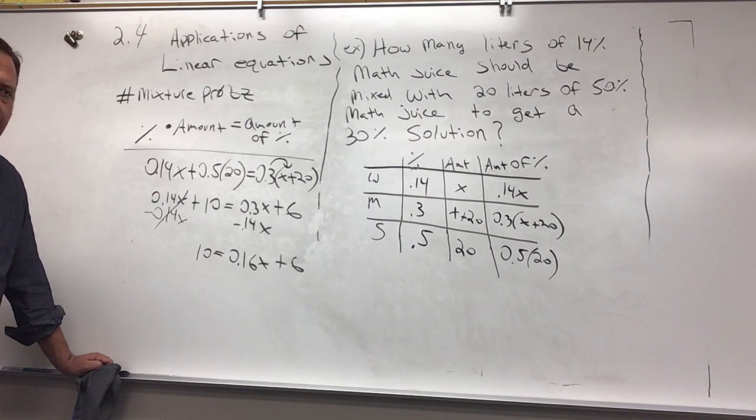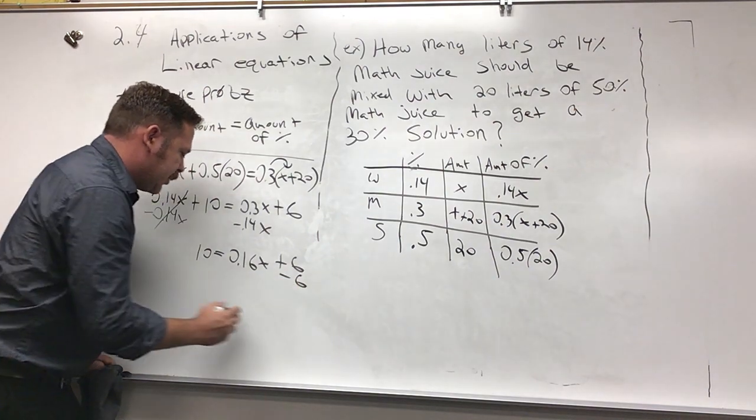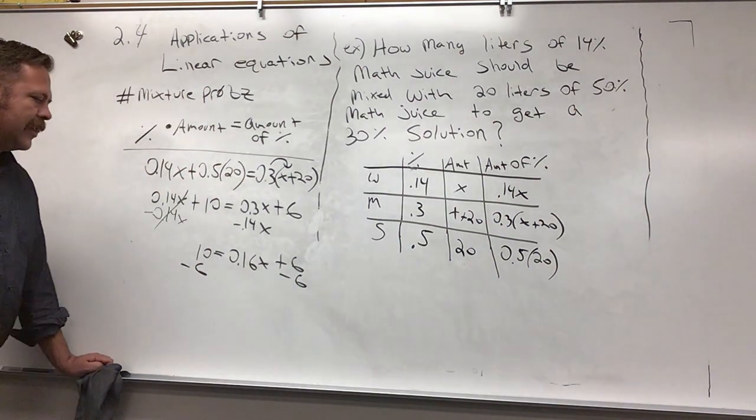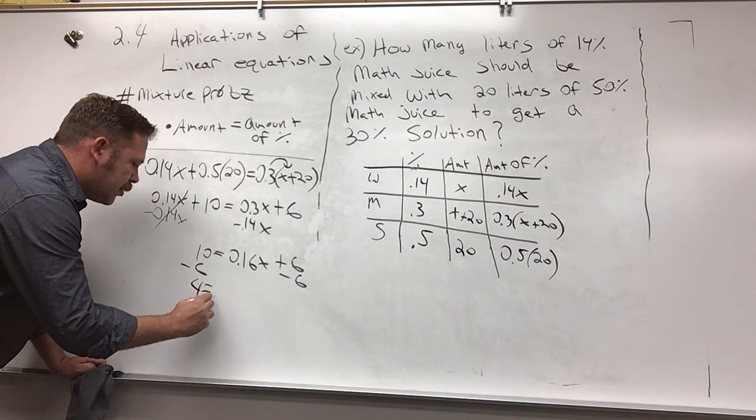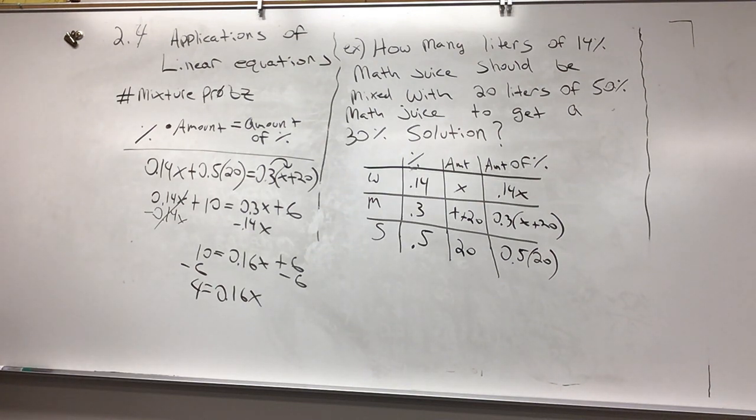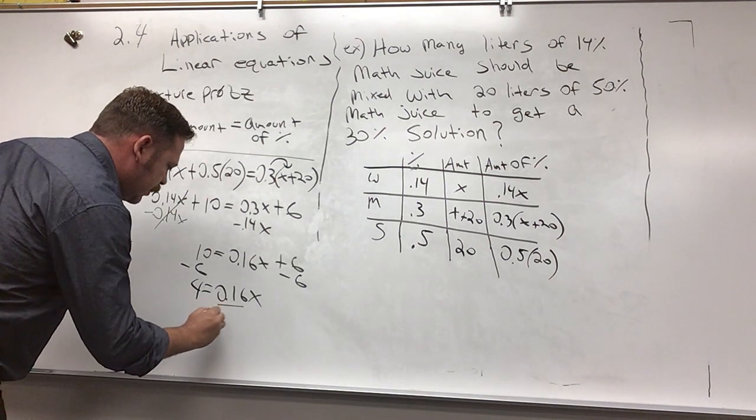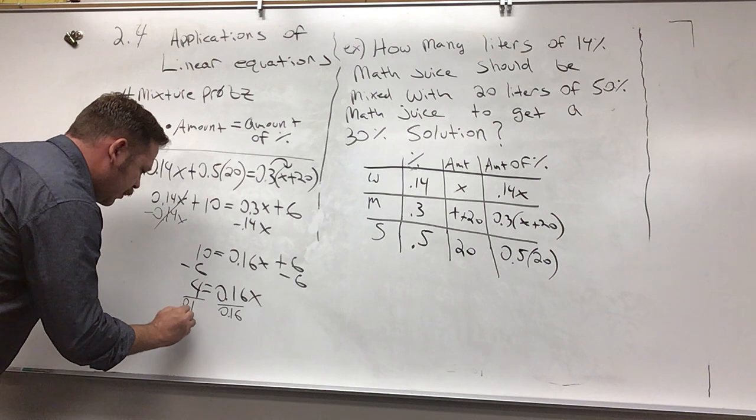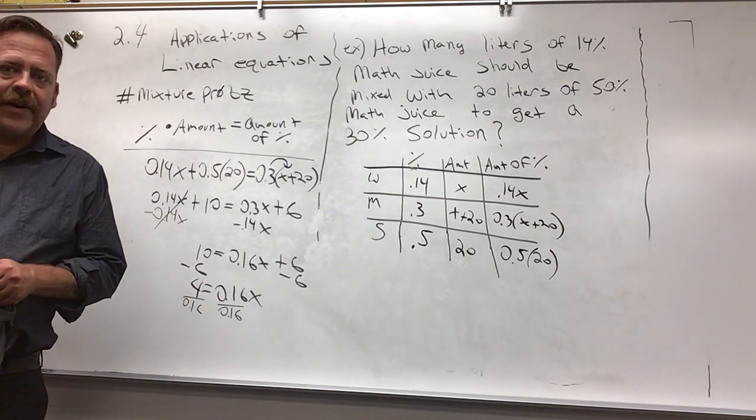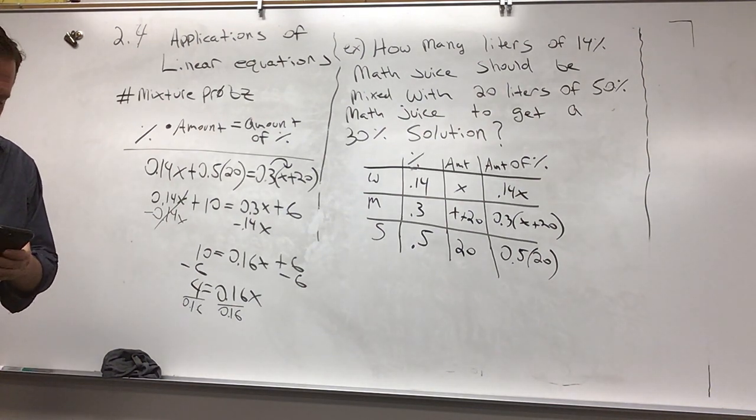At this point I'm going to subtract 6 and subtract 6, and then 4 equals 0.16x. Now I have to divide by 0.16 on both sides. This is embarrassing but I can't figure what that is off the top of my head and I left my calculator at home, so I'm going to use my phone calculator. It's 4 divided by 0.16.